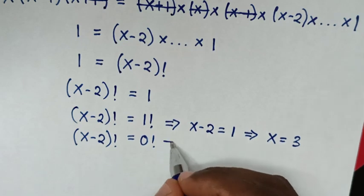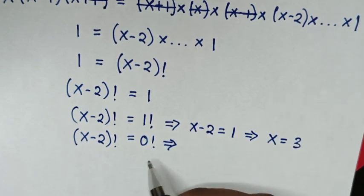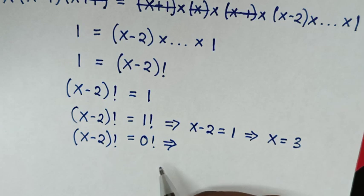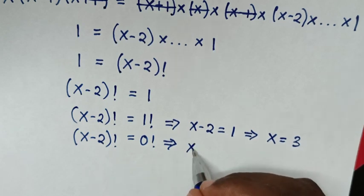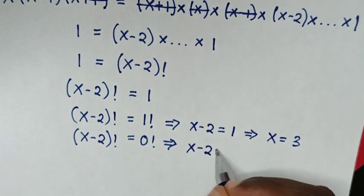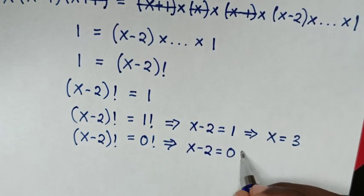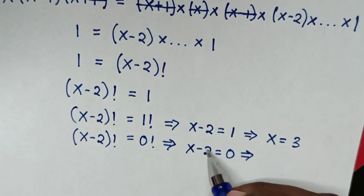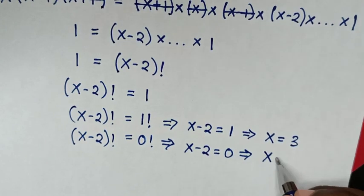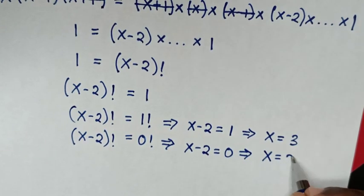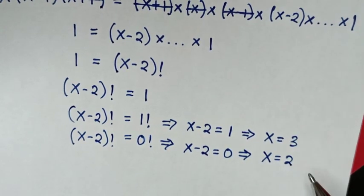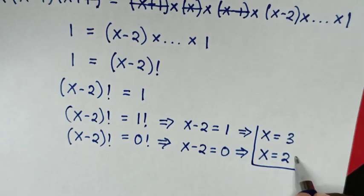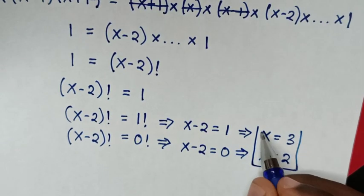Comparing the second case, (x minus 2) factorial equals 0 factorial gives us x minus 2 equals 0, so x equals 2. Therefore the two values of x that solve this problem are x equals 3 and x equals 2.